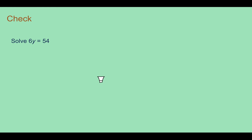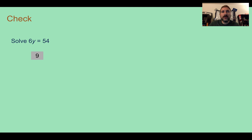Check your understanding: Solve 6y equals 54. You should find that y equals 9. This shows multiplication — 6 times y equals 54 — so we do the opposite, which is division. Dividing both sides by 6, we get y equals 9.